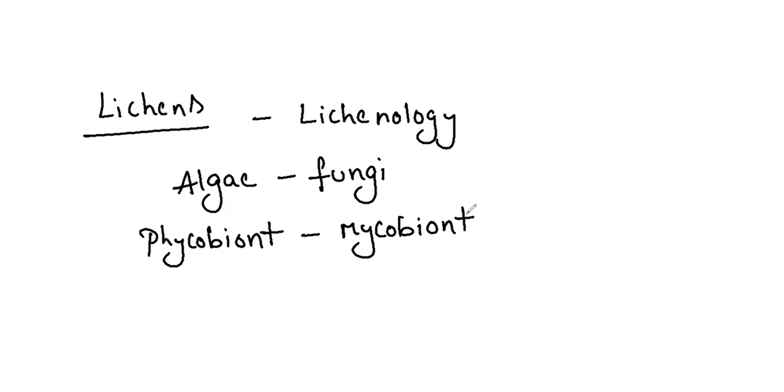Lichens are a distinct group of plants having two components: phycobiont and mycobiont. The algae component synthesizes carbohydrates by photosynthesis and provides nutrition to the fungal component, whereas the fungal component provides nutrient absorption and water retention.